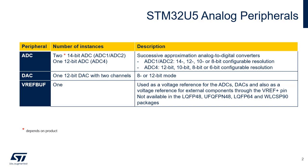ADC1 and ADC2 have a 14-bit maximum resolution while ADC4 has a 12-bit maximum resolution. The DAC module embeds two independent 12-bit converters. The VREF buffer provides a voltage reference that can be used internally by the ADCs and DAC, and also externally through the VREF Plus pin. The VREF buffer is not available in packages with a low pin count.